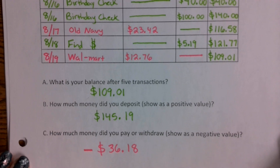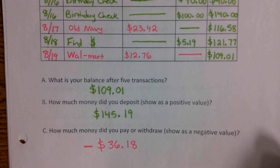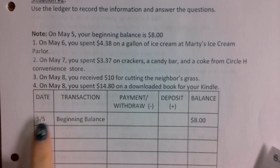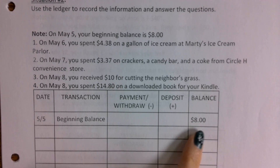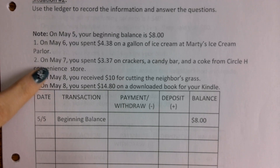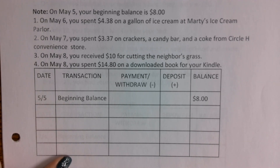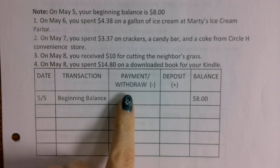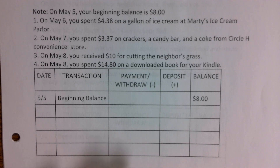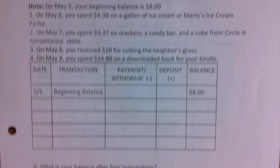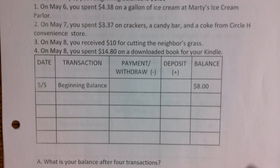Now you're going to do the same thing for Situation 2 on your own. Go to the next page. Note that I've already put down your starting balance on May 5th — you're starting with $8. Record each transaction: include the date, label the transaction (if it's a store, write the store name), put withdrawals in the withdrawal column and deposits in the deposit column — it can't be both. Then balance your checkbook and answer questions A, B, C, and D.